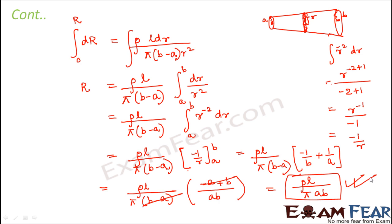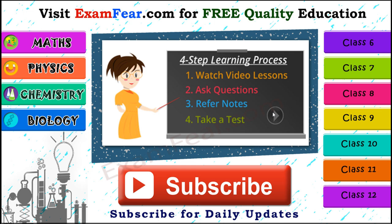This is one way of solving these tricky problems where the conductor is not uniform but changes shape from one end to the other. In such cases, always consider a small element and integrate from one end to the other. Please visit examfear.com for free quality education — watch video lessons, ask questions, refer notes, and take free online tests. We have content for class 6 to 12 in physics, chemistry, mathematics and biology, along with practical videos. Please subscribe for daily updates.